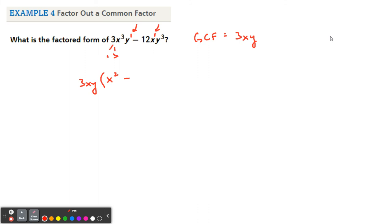The minus sign is not going to change. 12 divided by 3 is 4. x goes away because there's only 1. And this y cubed, when I take away a y, becomes y squared. And now if you look at this, this is going to be a difference of two squares.